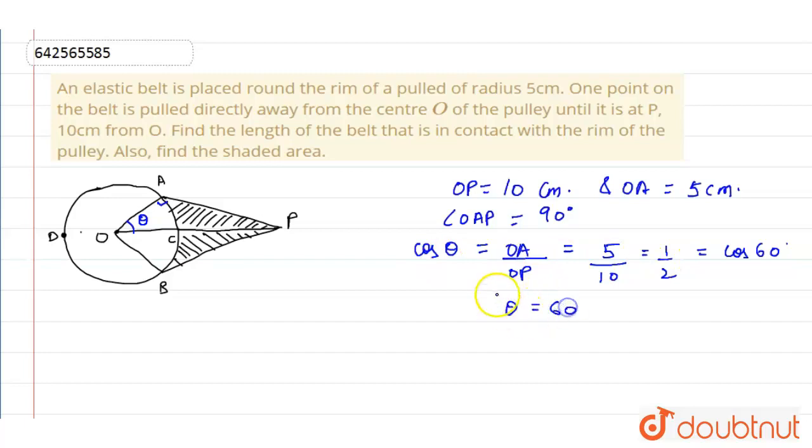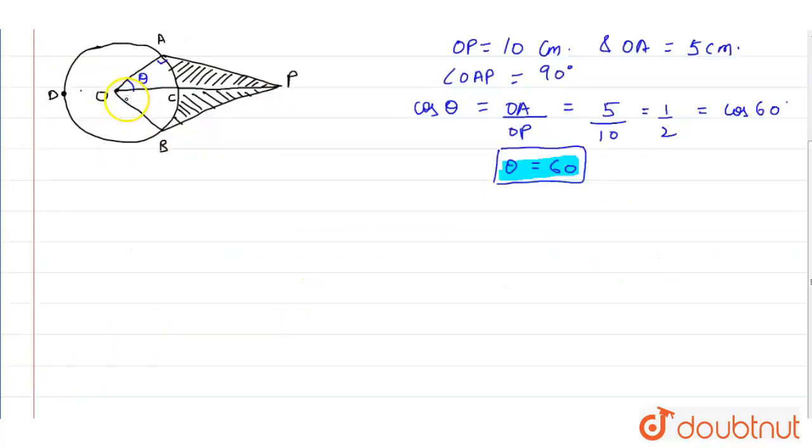And 1 by 2 is cos 60, so we compare theta, we will get the value of theta is 60. Now we can see that angle AOB will be angle AOB is equals to 60 plus 60 because this is the same radius of the circle, so this will be 120 degree.